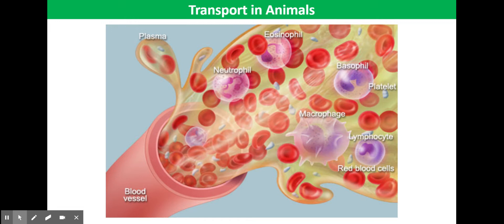The cells include red blood cells, also known as erythrocytes, various white blood cells such as leukocytes, and fragments called platelets.